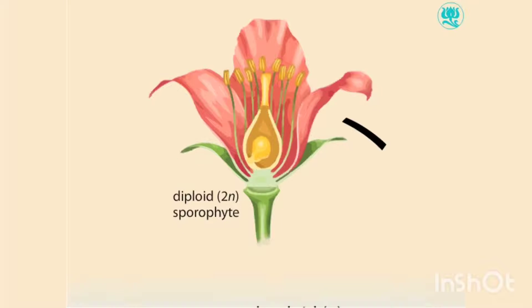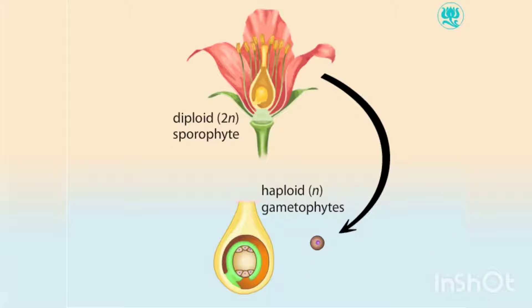As with all land plants, the life cycle of an angiosperm alternates between a diploid sporophyte generation, represented here by the flower of the mature sporophyte plant, and a haploid gametophyte generation.